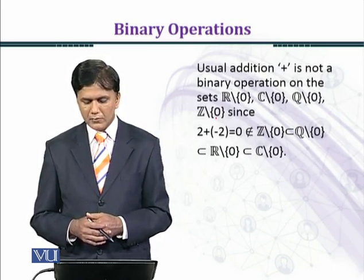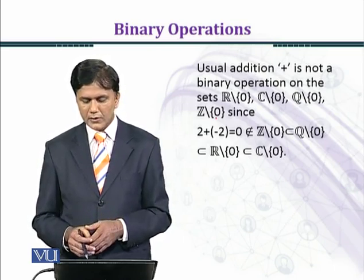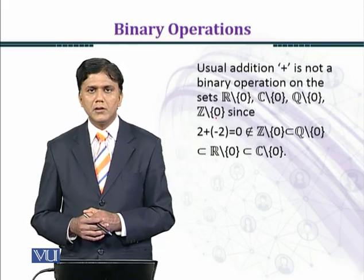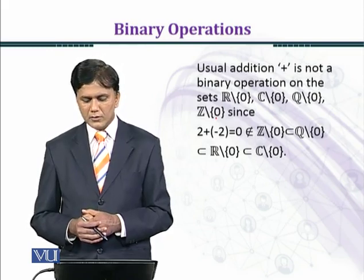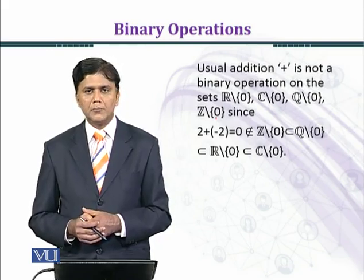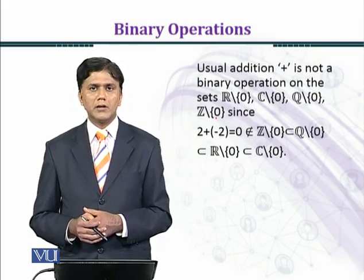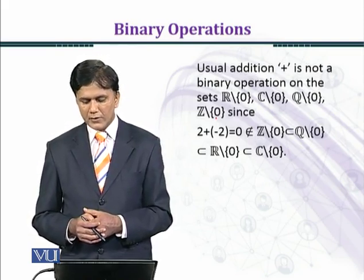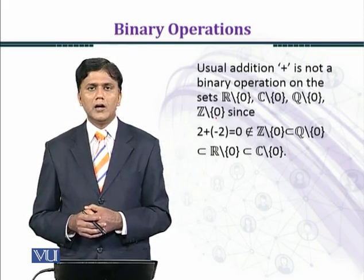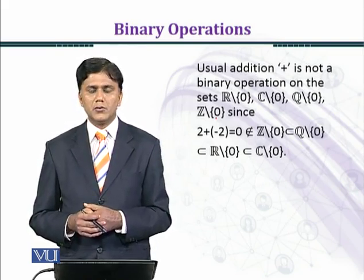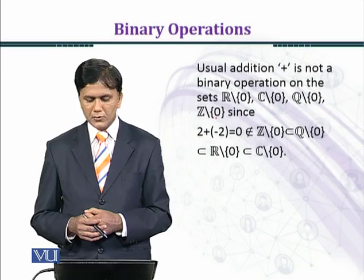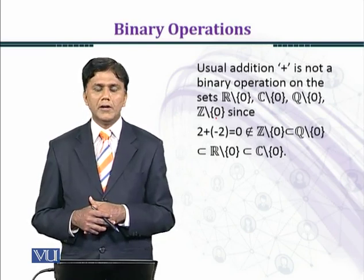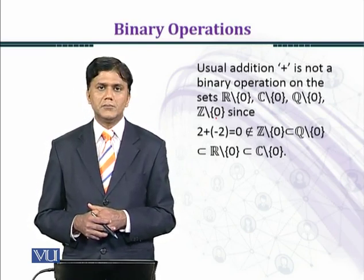Similarly, Z\{0} is a subset of Q\{0} (non-zero rationals), which is contained in R\{0} (non-zero reals), which is contained in C\{0} (non-zero complex numbers). The same counterexample shows that Q\{0}, R\{0}, and C\{0} do not have addition as a binary operation.